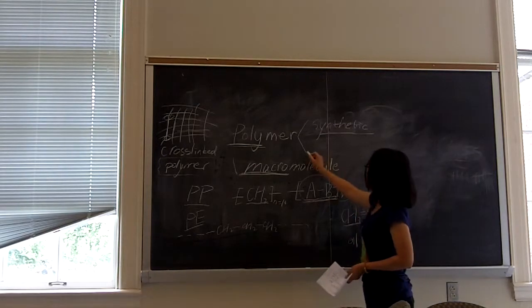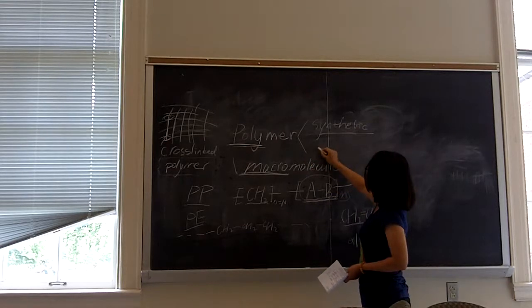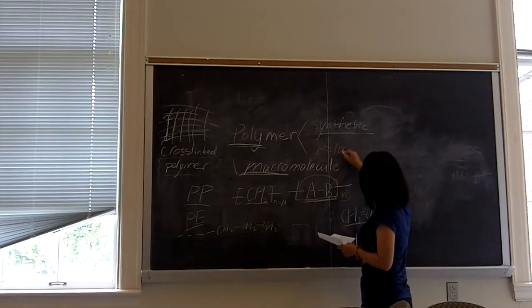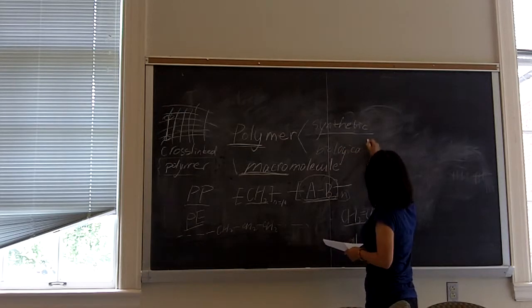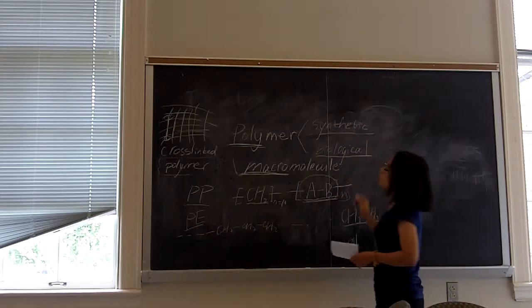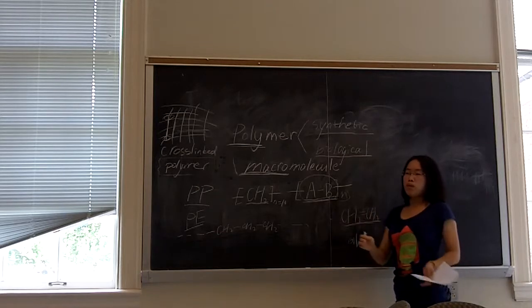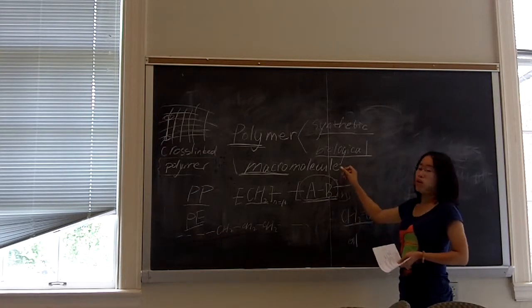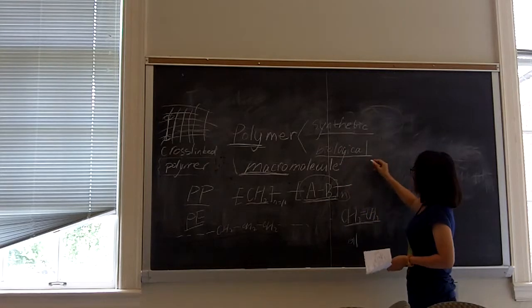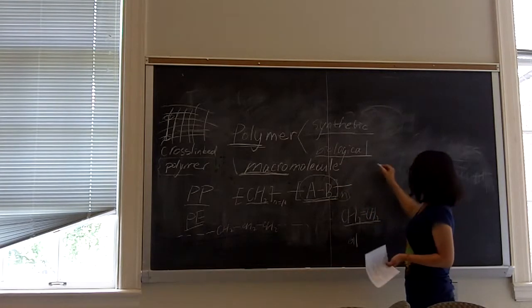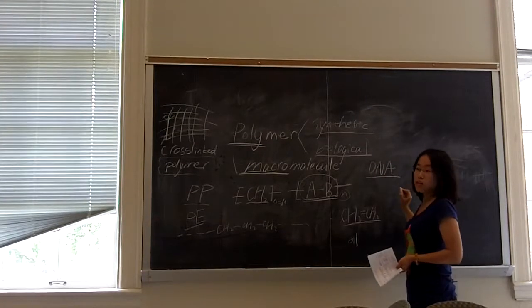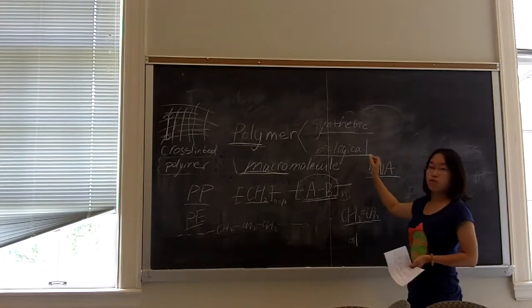And another category of polymer is biological polymer. We human beings, we are actually a combination of macromolecules or polymers. We have protein or DNA. They are all polymers. So this is another example of polymer.